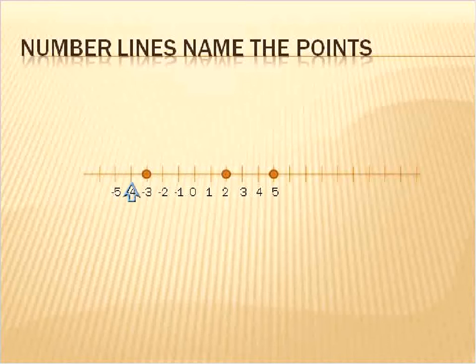So this is negative 5, this is negative 4, negative 3, negative 2, negative 1, 0. And then after 0, it goes 1, 2, 3, 4, 5. That's the way number lines work.